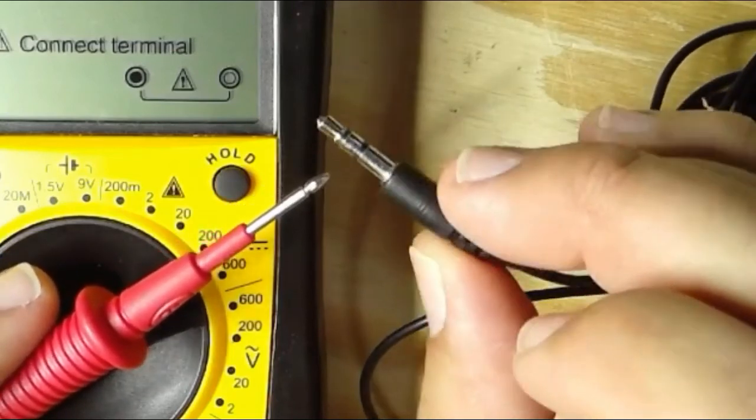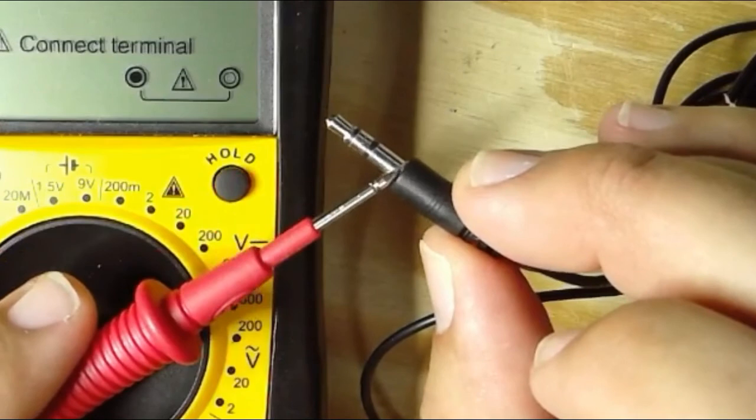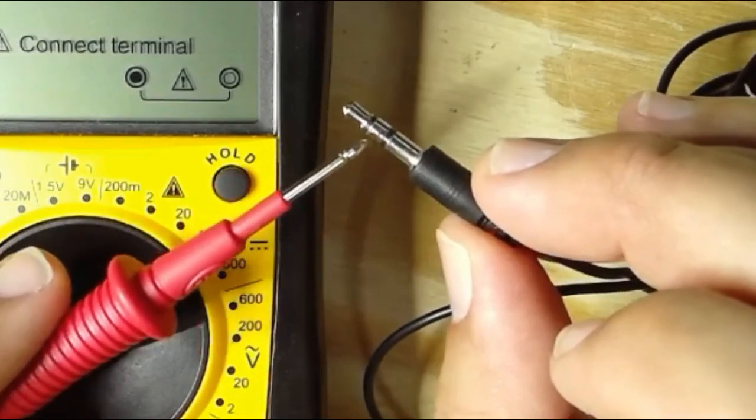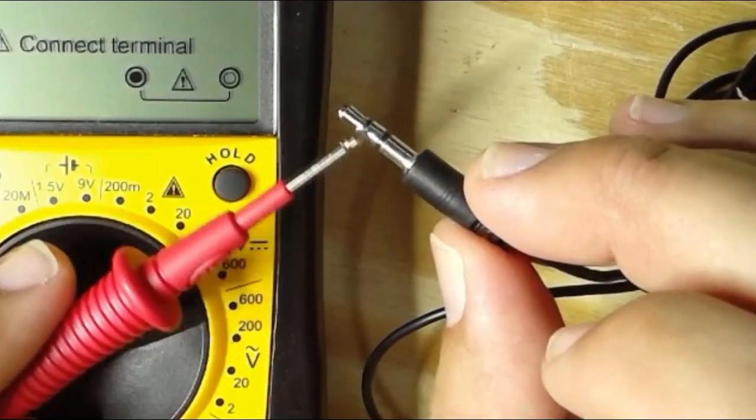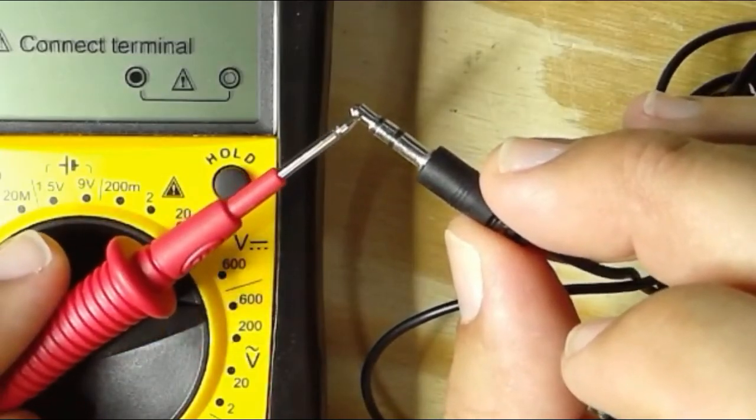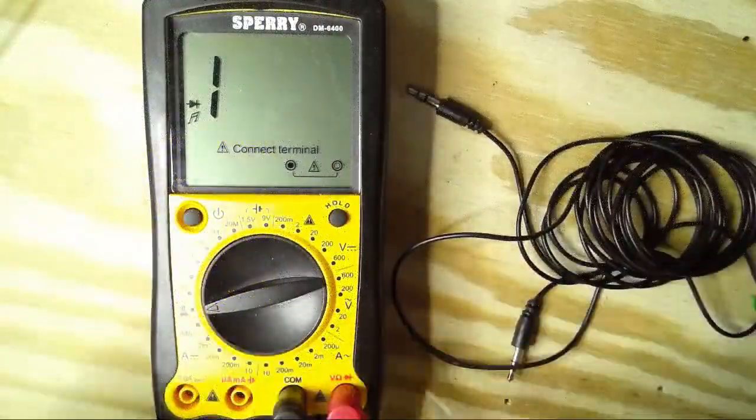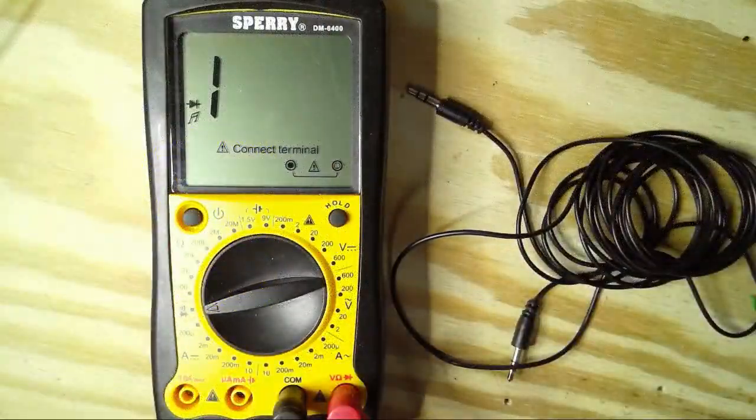So on a stereo plug, this is the tip, the ring, and the sleeve. And we are going to wire the ring and sleeve together to make it mono. And then we really do care which one has the tip. So we're going to use the continuity tester to figure out which wire is the tip.